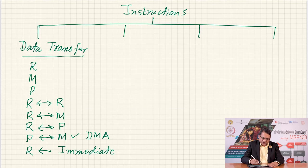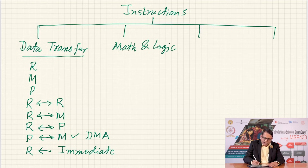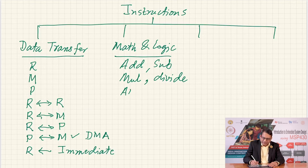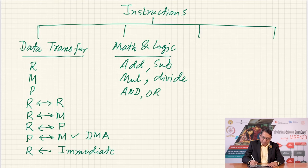The second type of instruction is for math and logic. This includes instructions such as add, subtract, multiply, divide, and bit operations such as AND, OR, and other similar logical operations.